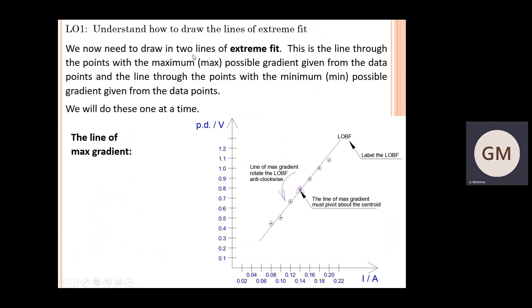We now need to draw two lines of extreme fit. This is the line through the points with the maximum possible gradient given from the data points, and the line through the points with the minimum possible gradient.